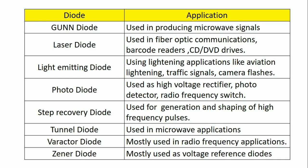The last one is the Zener diode, which is mostly used as voltage reference diodes. This Zener diode can also be used as a shunt voltage regulator. So like this, we can use these diodes in different applications.